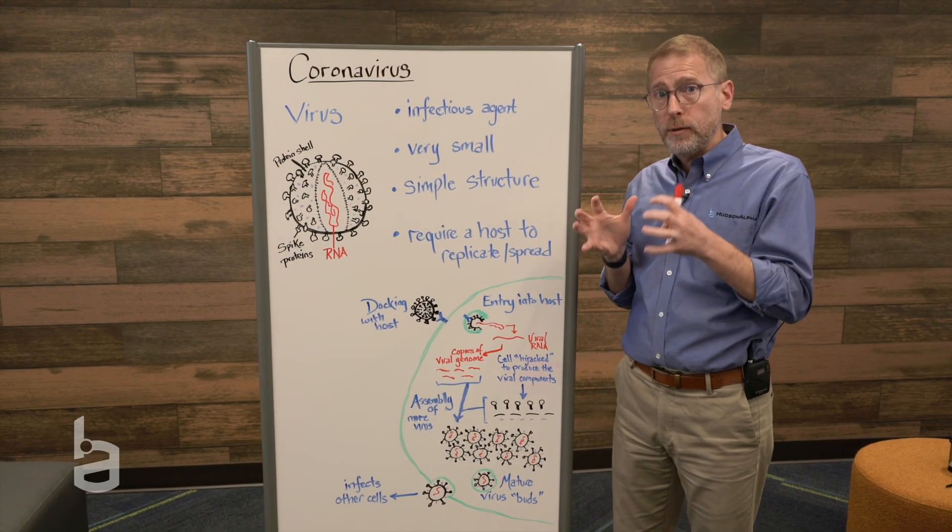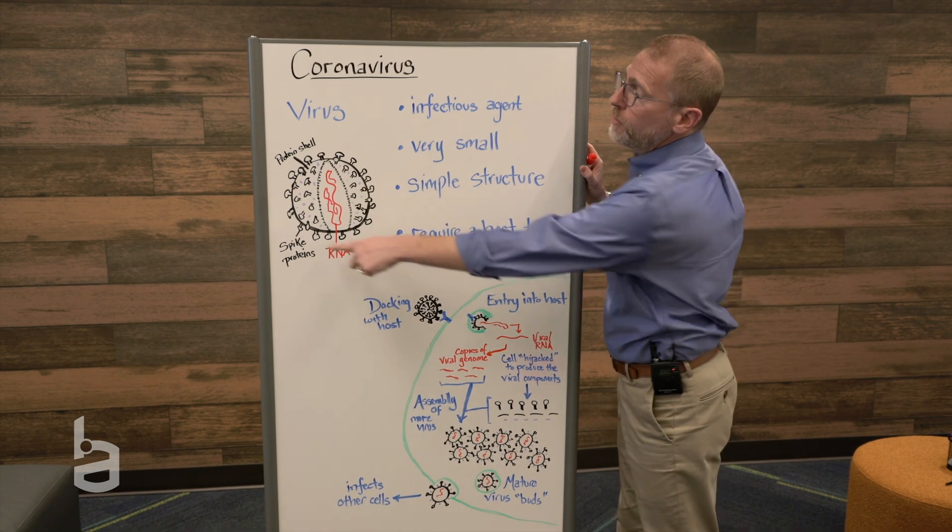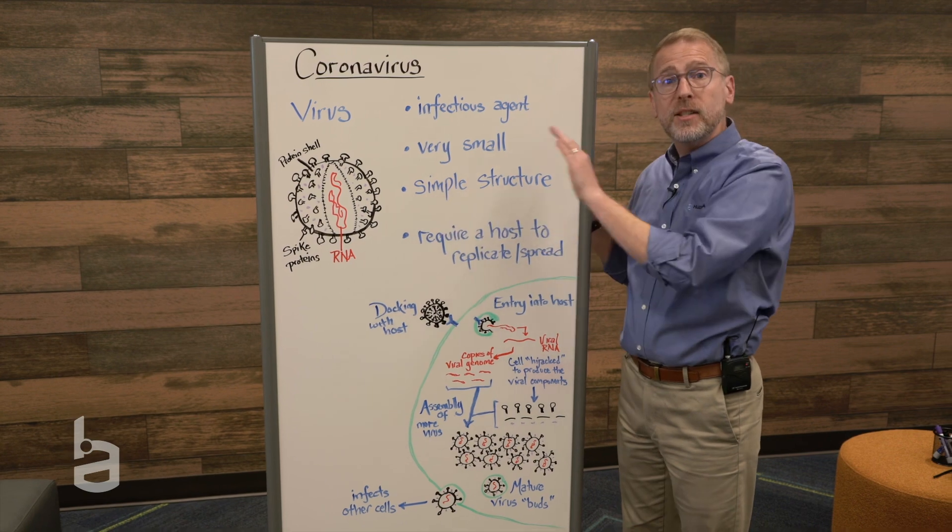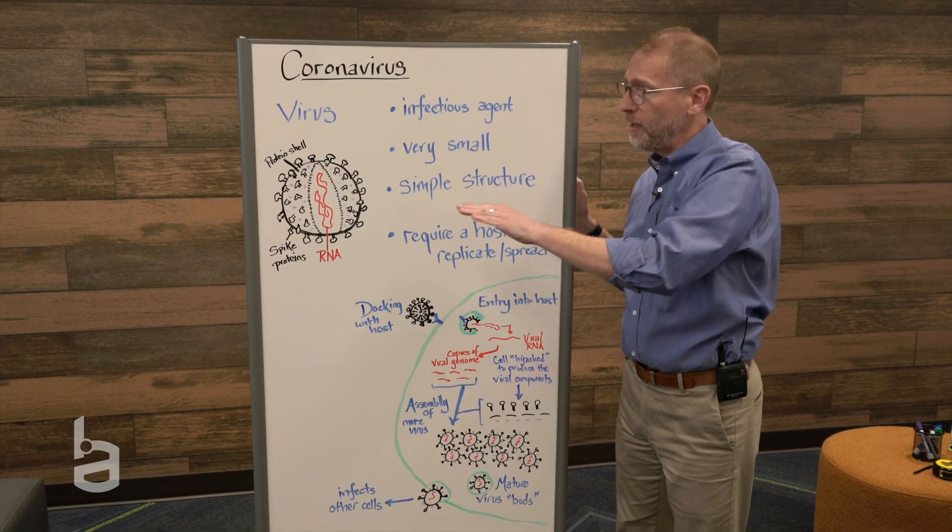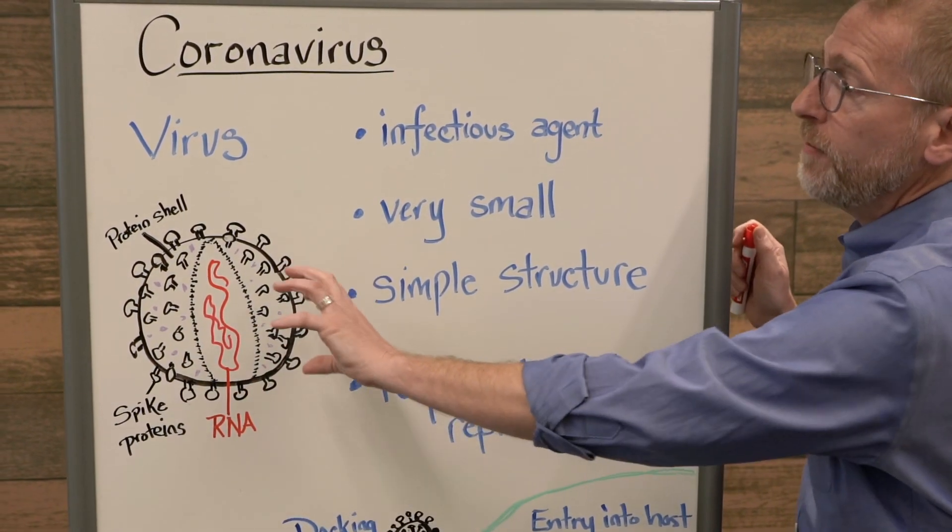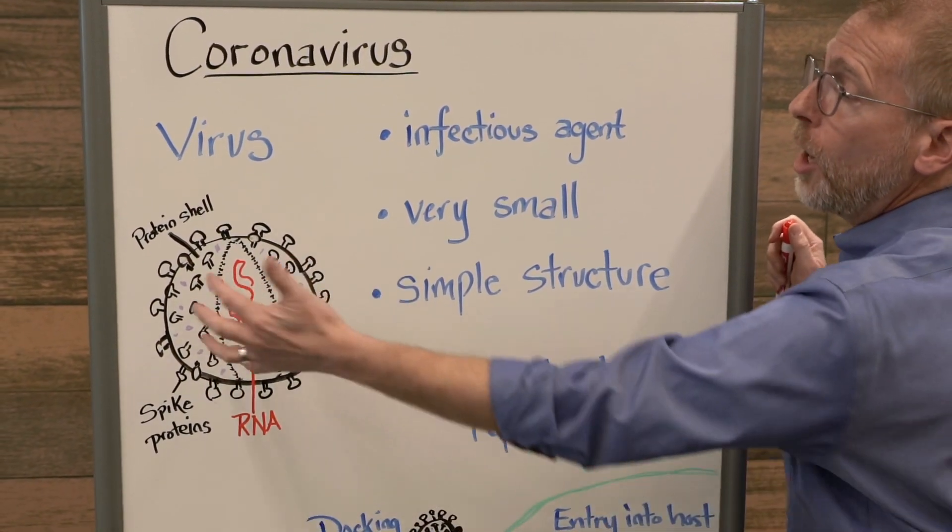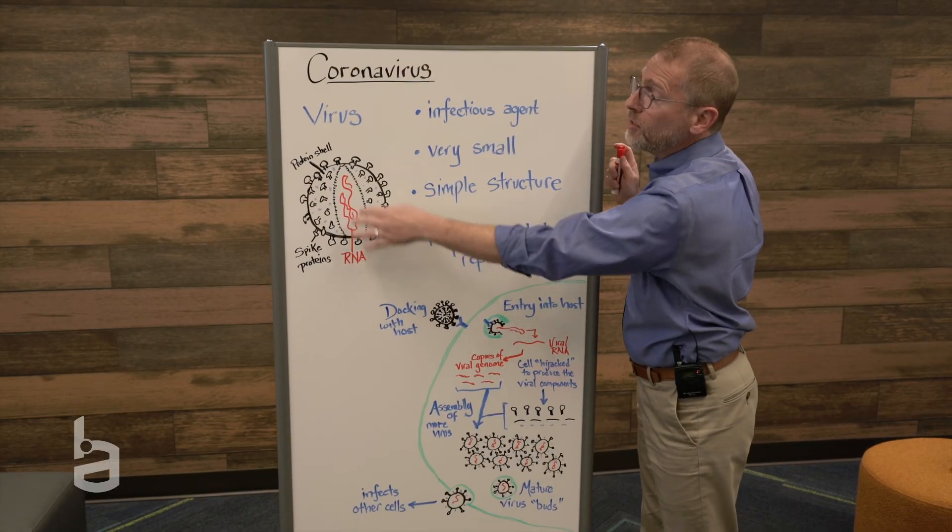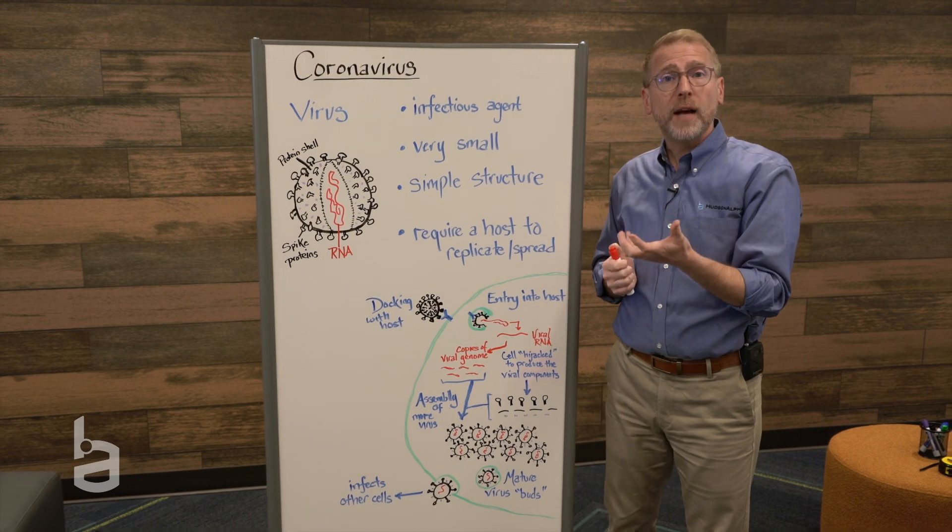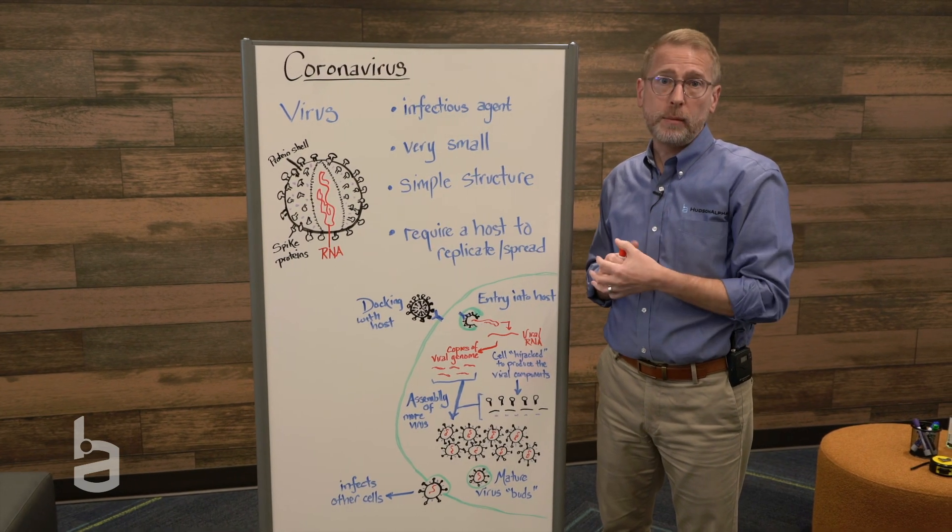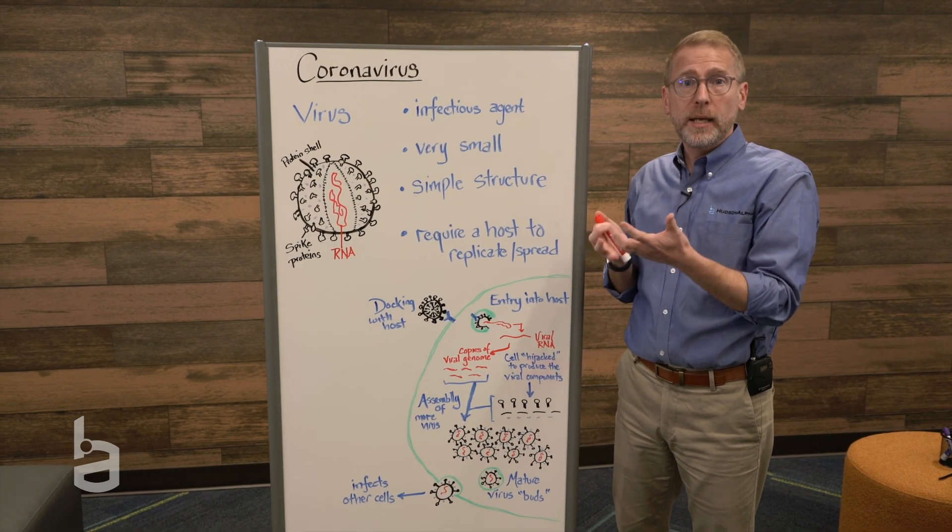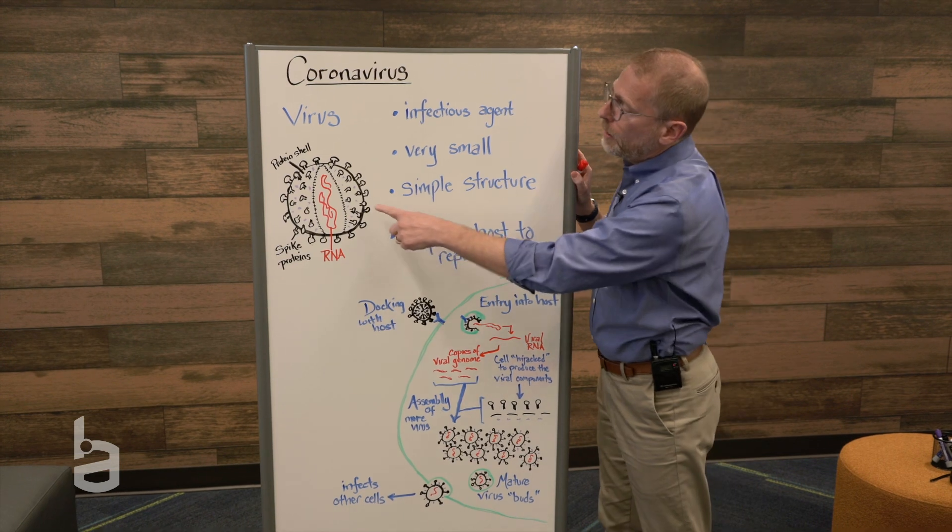Now, when we talk about coronaviruses specifically, coronaviruses have a spherical shape. This looks a little bit kind of like the Death Star, and that's the extent of my Star Wars content knowledge. But it has these spikes all around them, these specific proteins, around a hard protein shell. And inside that shell, if you opened it up, you would actually see the genetic material. Now, some viruses use DNA as their genetic material. Coronavirus actually uses RNA, a similar type of nucleic acid.